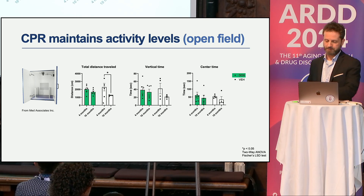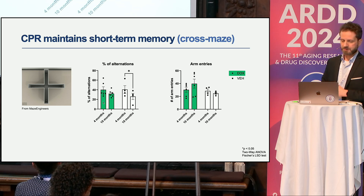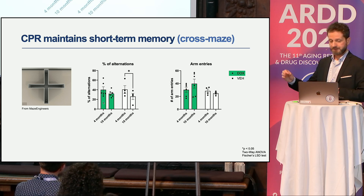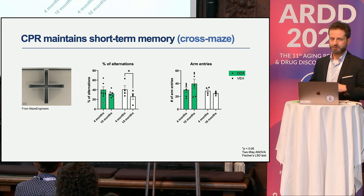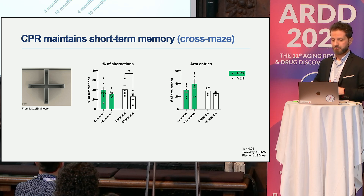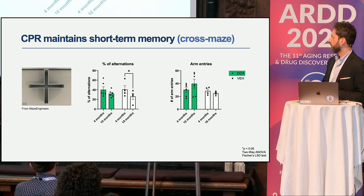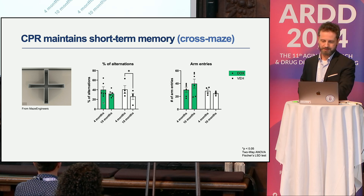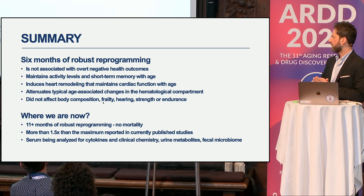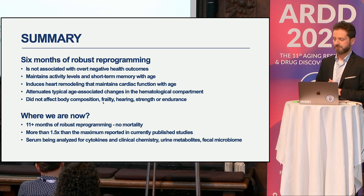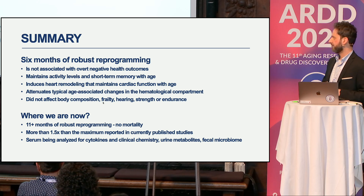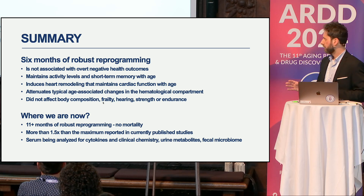In the open field test we did find a dramatic difference. There is an age-associated decline in locomotor activity in vehicle controls, who drop off significantly over time, while the reprogrammed NOLIFE mice maintain their activity levels. In the cross maze test for short-term memory, we measured percentage alternation—the tendency of an animal to enter different arms without repeating, based on the assumption that it remembers where it has been. Vehicle controls show a loss of short-term memory over time, whereas reprogrammed mice do not show this loss. To summarize: after six months of robust reprogramming, we found no negative health outcomes; maintained activity levels and short-term memory; induced heart remodeling; and attenuated age-associated changes in the hematological compartment.